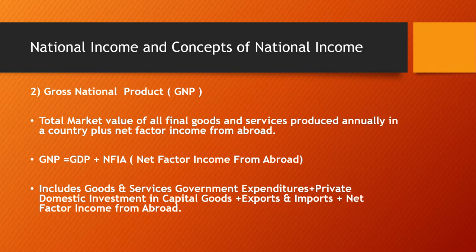Gross National Product is the total market value of all final goods and services produced annually in a country, plus net factor income from abroad. GNP = GDP + NFIA, where NFIA stands for net factor income from abroad. GNP includes goods and services, government expenditures, private domestic investment in capital goods, exports and imports, plus net factors from abroad.